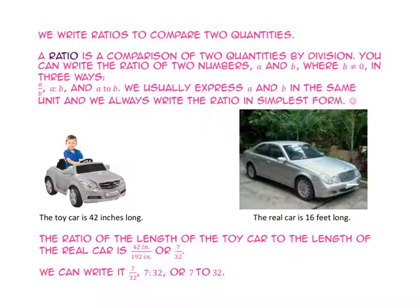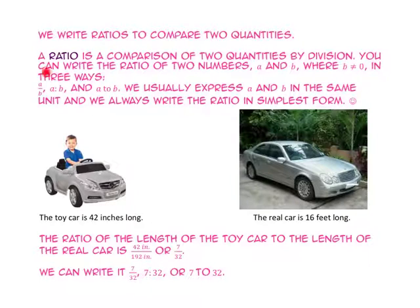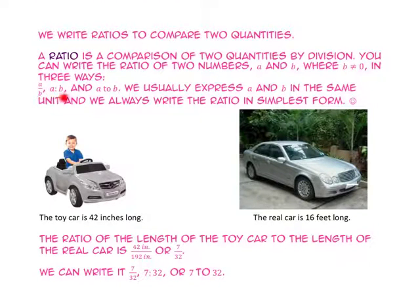We write ratios to compare two quantities. A ratio is a comparison of two quantities by division. You can write the ratio of two numbers, a and b, where b is not equal to zero, in three ways: in fraction form, with a colon, and with the word 'to' between them. In every single one of these, they are read 'a to b.' We usually express a and b in the same unit and we always write the ratio in simplest form.